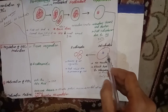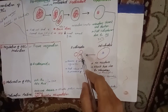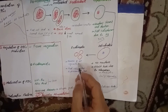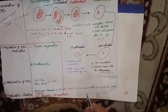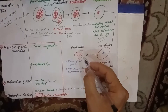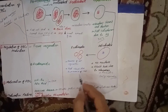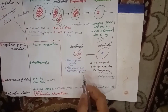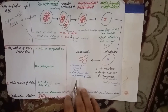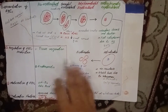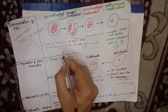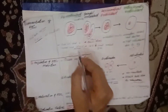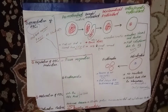The reticulocyte then gives rise to the erythrocyte, in which there is a complete absence of all cellular organelles. The erythrocyte appears red due to the presence of iron. These are the six stages through which the committed stem cell — the colony forming unit erythrocyte — differentiates into mature red blood cells.